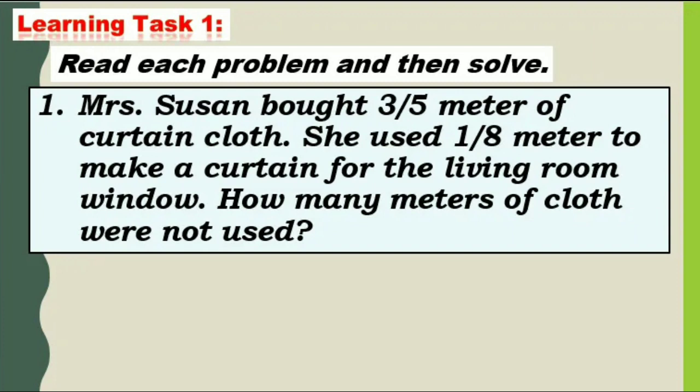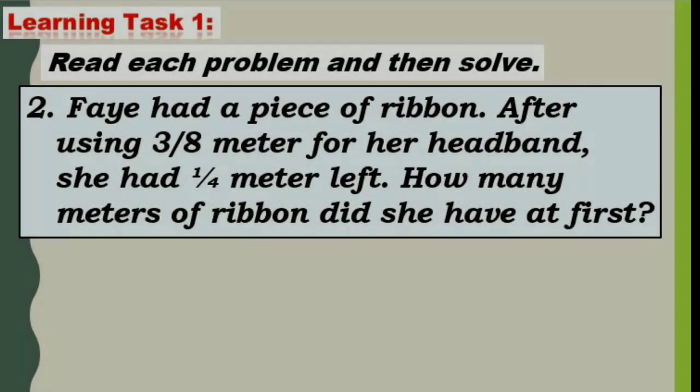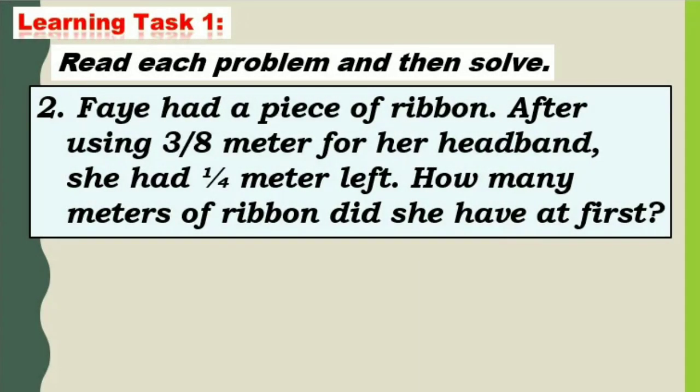Let's answer learning task 1. Read each problem and then solve. Mrs. Susan bought 3 fifths meter of curtain cloth. She used 1 eighth meter to make a curtain for the living room window. How many meters of cloth were not used?